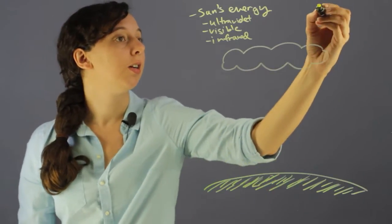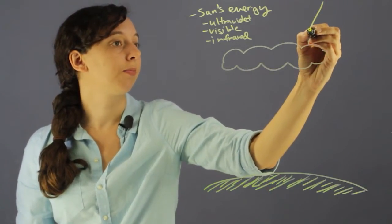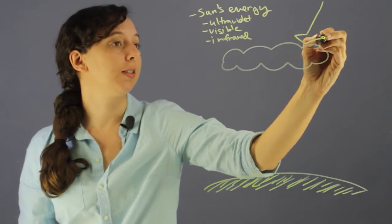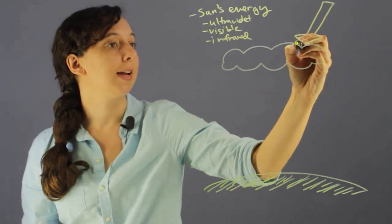So if you have a bunch of Sun's energy, one of the first fates is that it will be reflected by clouds.